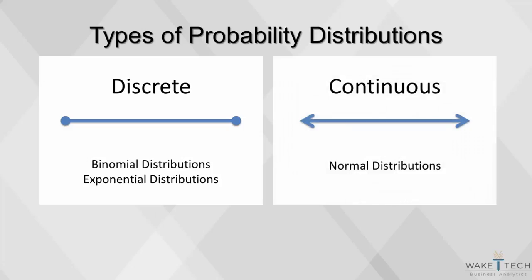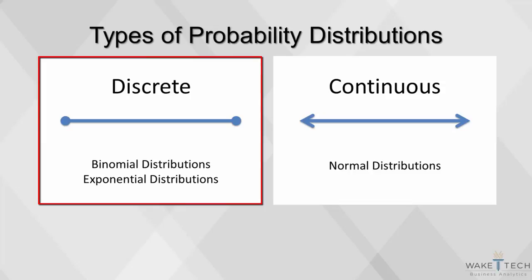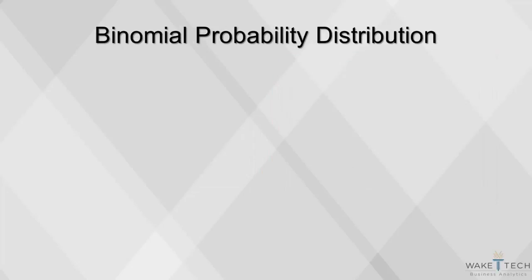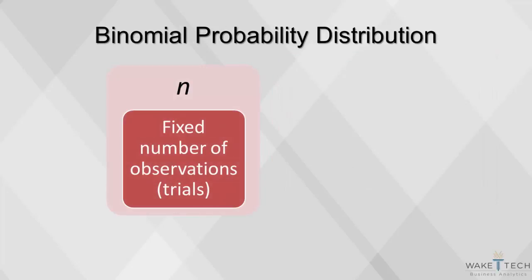A probability distribution visually summarizes the probabilities associated with all possible events for a variable. We will focus on three probability distributions that are commonly used in explaining real-world events. Binomial and exponential distributions are used with discrete data, while normal distributions are used with continuous data. A binomial distribution is a discrete distribution that represents the number of successes in n independent trials.